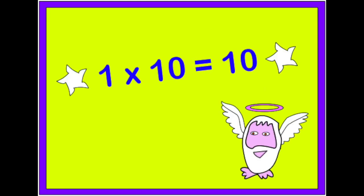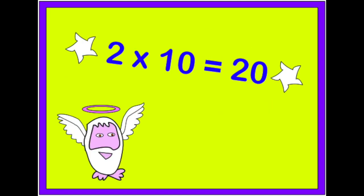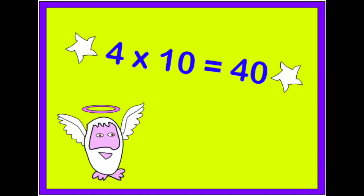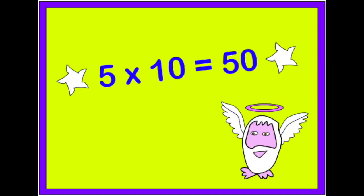1 x 10 is 10. 2 x 10 is 20. 3 x 10 is 30. 4 x 10 is 40. 5 x 10 is 50.